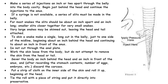For snake preservation, a series of injections must be applied throughout the ventral region into the body cavity. For most snakes, slits should be about an inch apart and an inch long. For smaller snakes, smaller slits are sufficient. While preserving the snake, we should not cut the anal plate.